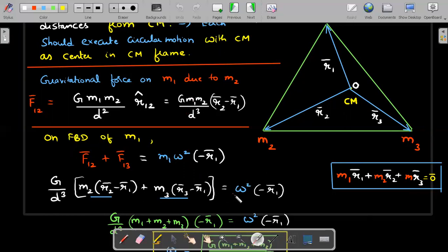Next important thing that I have not yet used is the fact that O is center of mass. So M1 R1 bar plus M2 R2 bar plus M3 R3 bar divided by M1 plus M2 plus M3 should be a null vector.